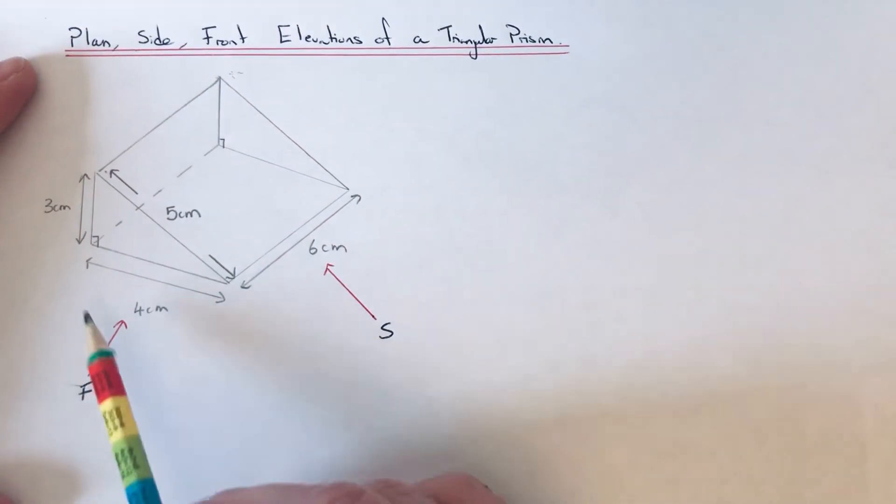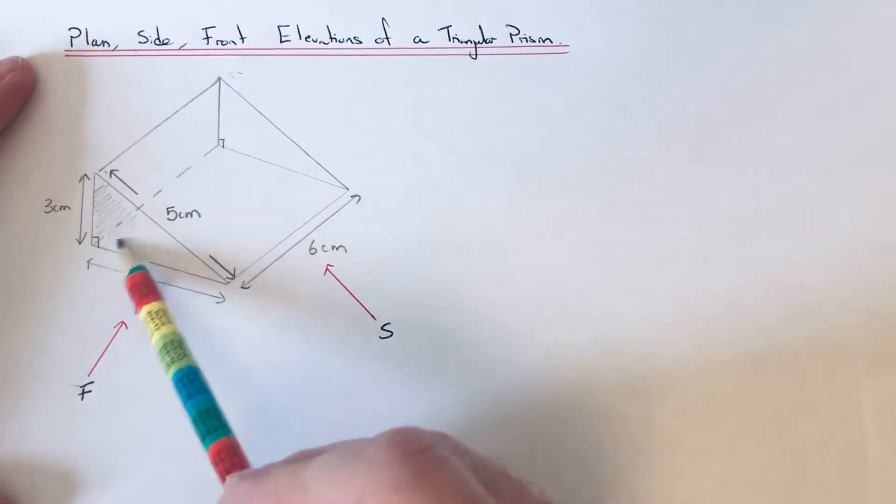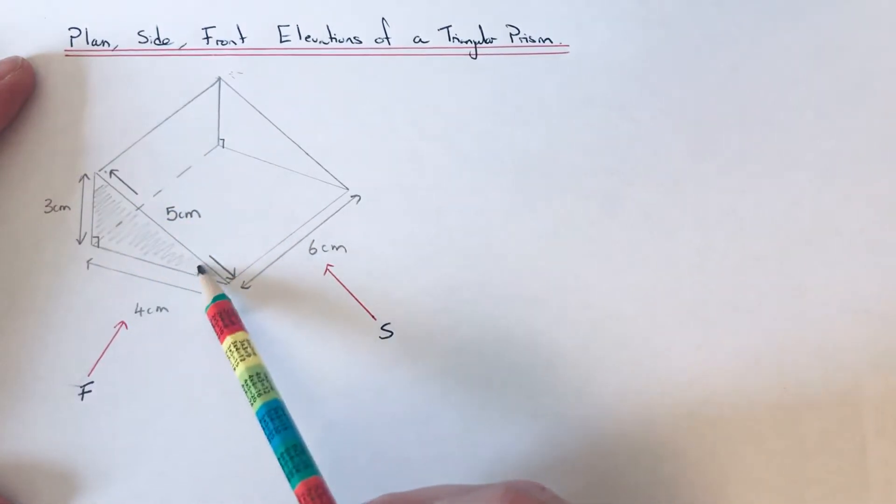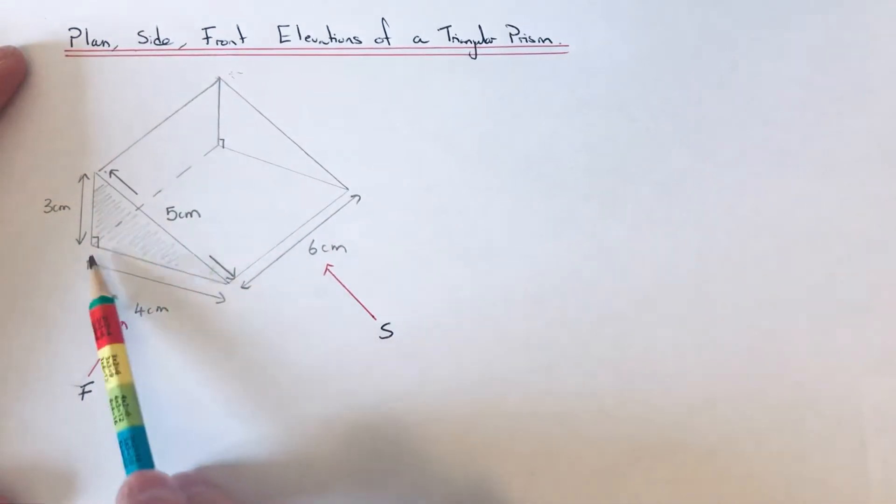The front elevation is what you see if you're looking at the prism in this direction here. What you're going to see then is this triangle here, so we need to draw a triangle with a base of four and a height of three.